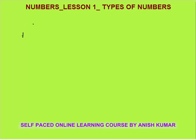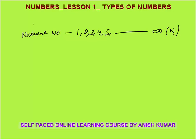First are the natural numbers. What are natural numbers? Natural numbers are 1, 2, 3, 4, 5, up to infinity — they are natural numbers. Their symbol is capital N. Whenever you see capital N, it means that this symbol represents the natural numbers.